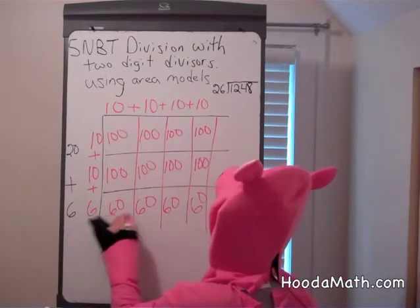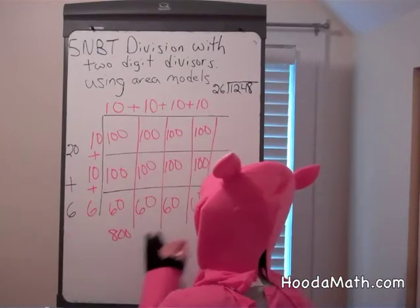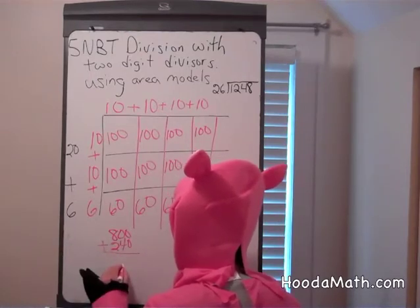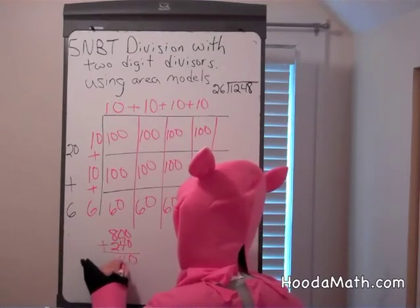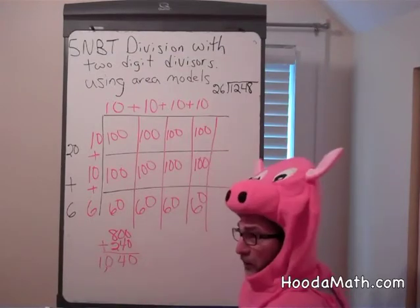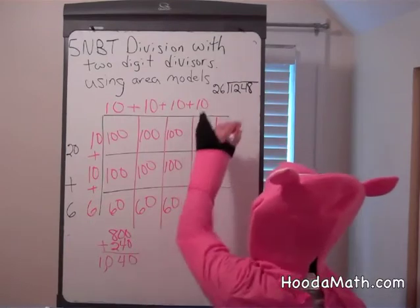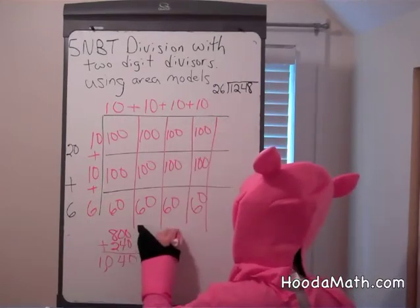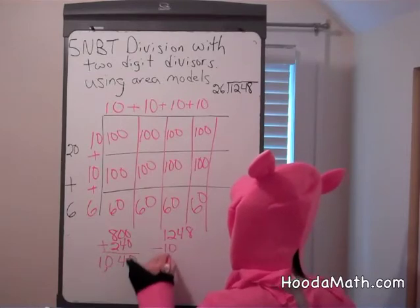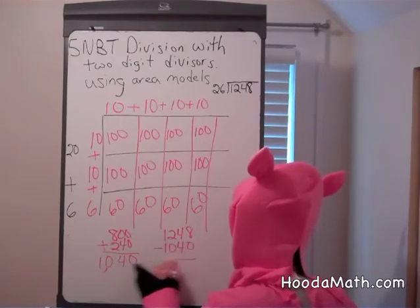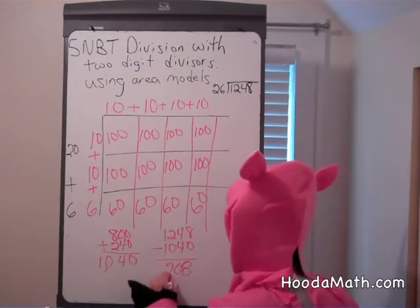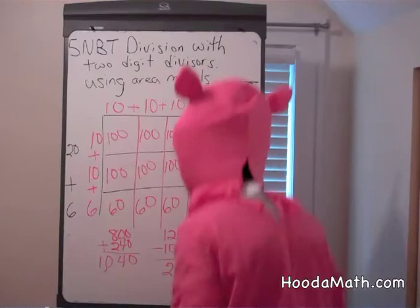Plus 4 times 60 is 240. So far we have 1,040. Now we take the number 1,248, subtract 1,040, and we get 208. We need 208 more.